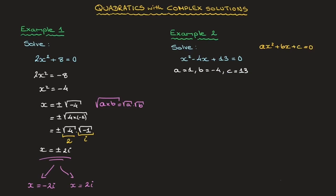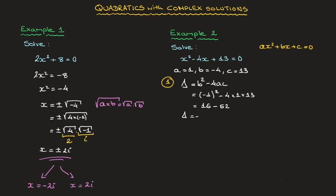When solving such quadratic equations, the first thing we need to do is calculate the discriminant delta. Remember, delta equals b squared minus 4ac. Using our values, delta equals negative 4 squared minus 4 times 1 times 13, which is 16 minus 52, and that leads us to delta equals negative 36.